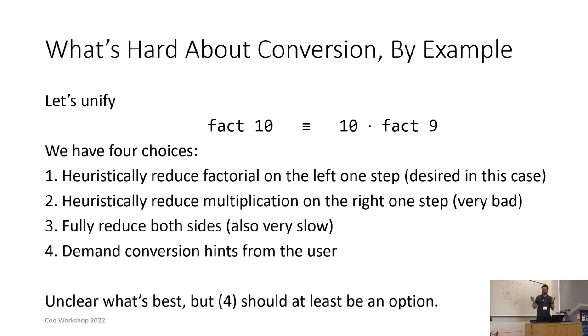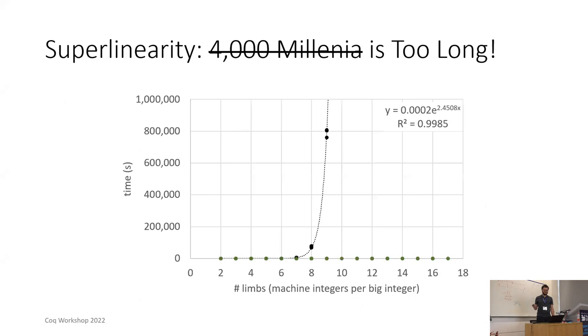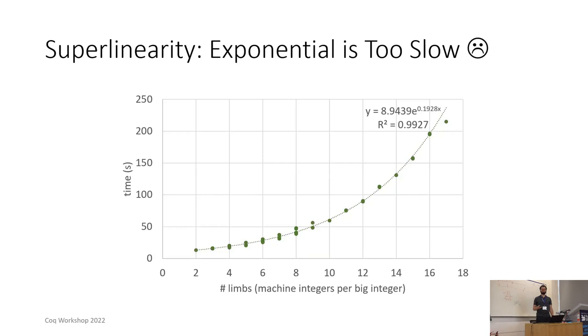Once you track the performance issue down to this issue though it's relatively easy to fix. You can give conversion hints to Coq. The strategy command lets you do this in one line 10 or 20 characters. You basically say unfold factorial before you unfold multiplication. You add this line of code and that fixes the problem. It turns the exponential black line into the very flat green line but when you zoom in it is still exponential. I didn't bother spending the time to track down this issue because by the time I had tracked it down to this point Fiat Crypto had moved on.